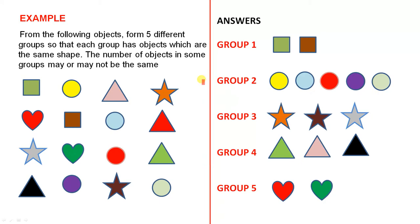Another example. From the following objects form five different groups, so that each group has objects which are the same shape. The number of objects in some groups may or may not be the same. So here we have all these shapes there. And it says we have to form five different groups, groups one to five.